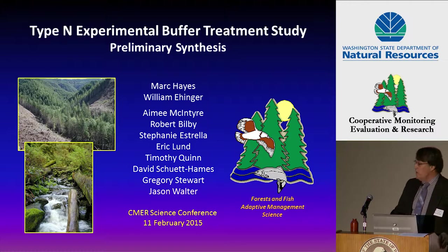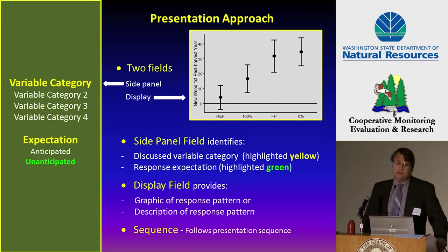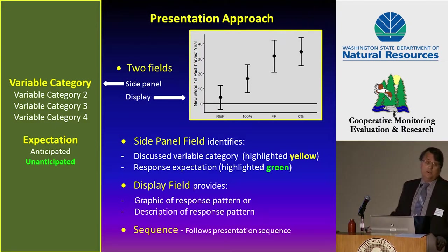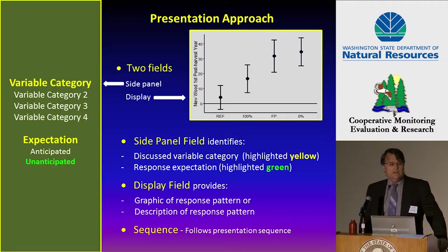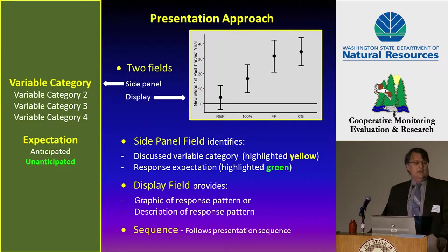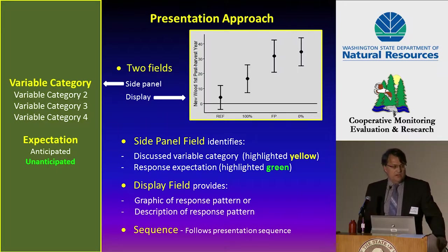We've got a list of the primary folk on this introductory slide. Throughout this talk I'm going to have the presentations in this double panel format. On the left hand side we'll have the variable category listed, and underneath what I call the expectation. Expectation refers to the fact that if there was information from other studies that we anticipated the result, it would be 'anticipated.' If it gave us a result that was novel, it was 'unanticipated.' In a few cases we just had no information — it would say 'none' there. On the right hand side we'll have a pictorial panel of the study result, or in some cases basically just a description of those results.